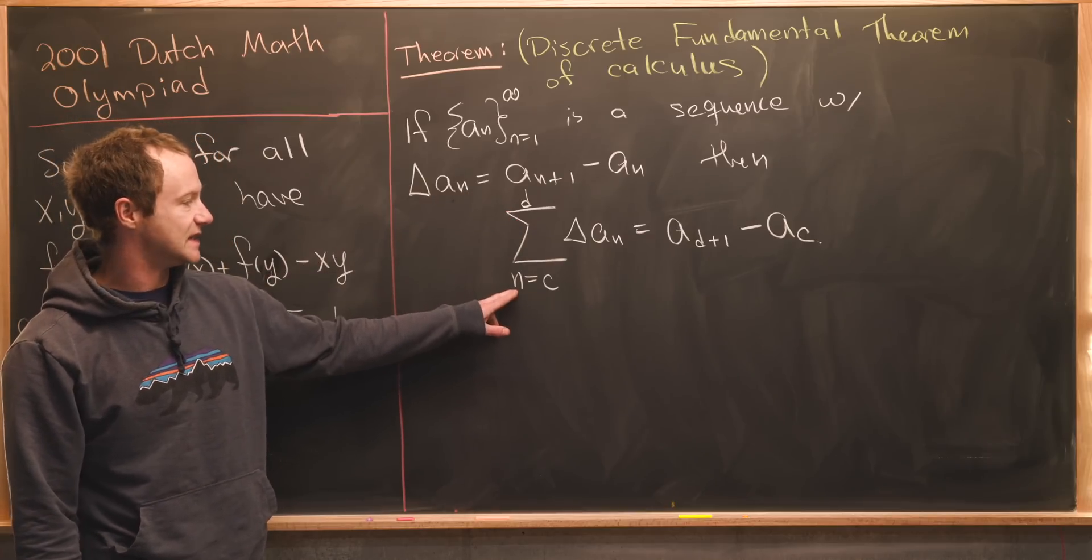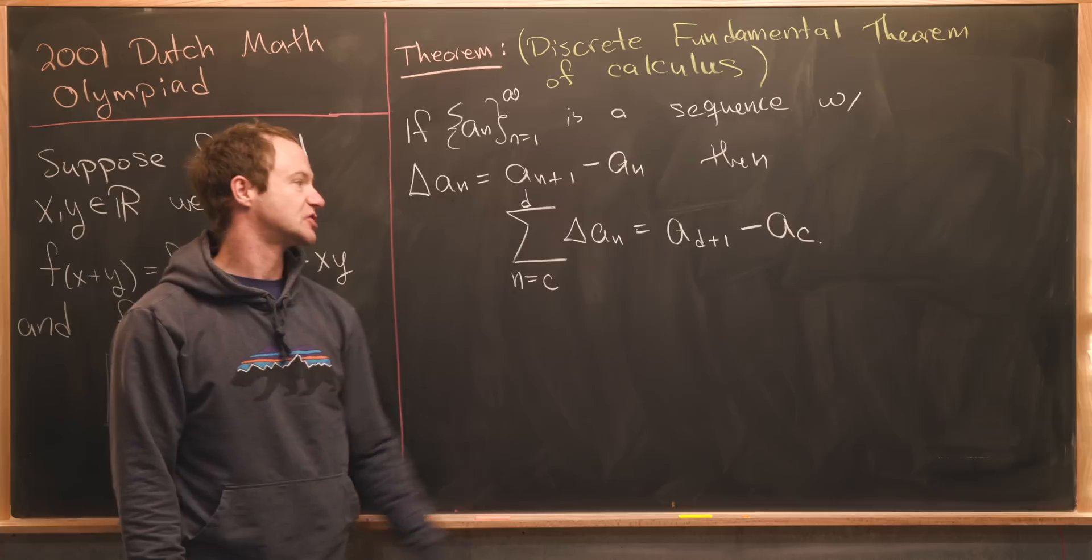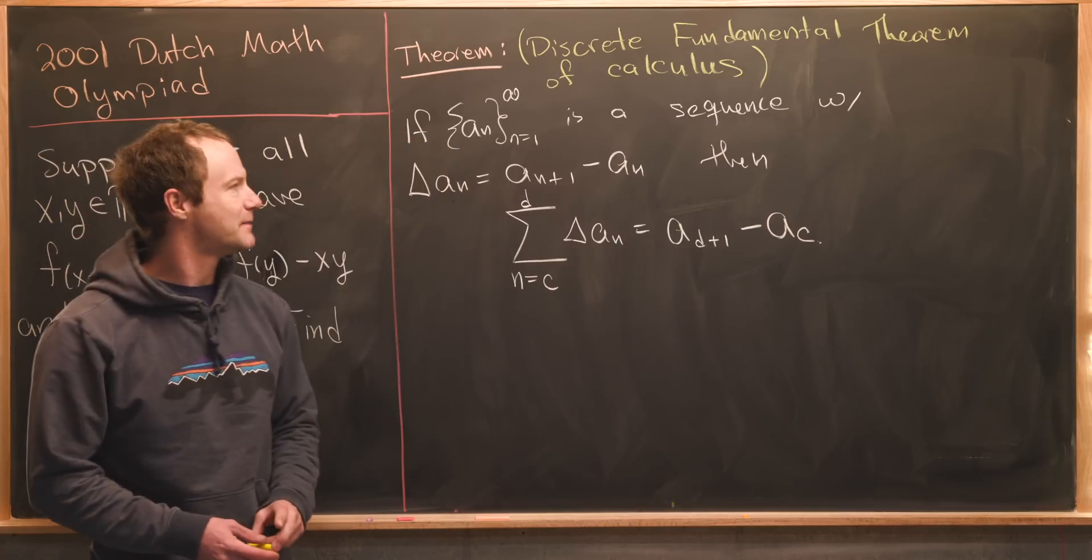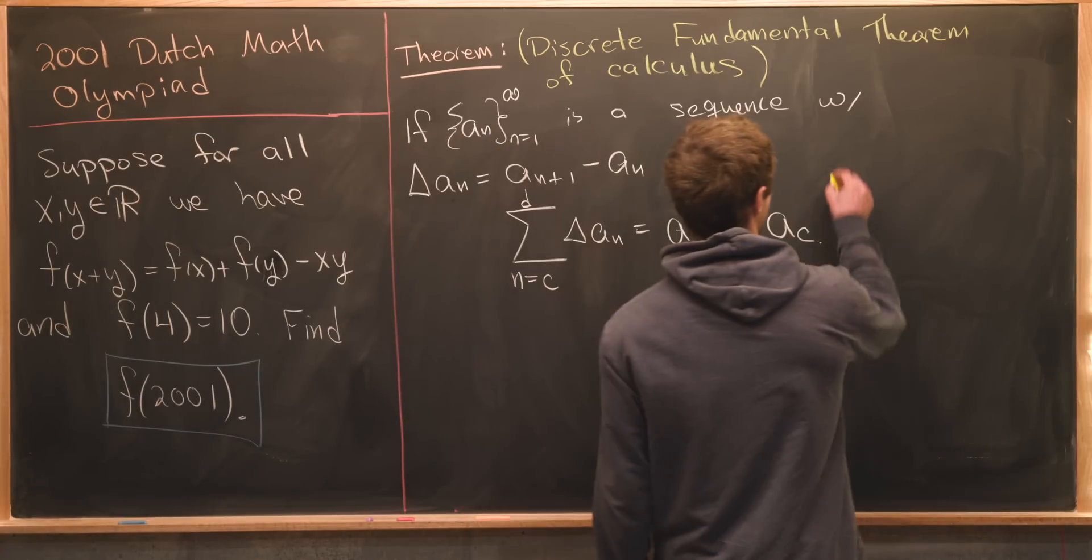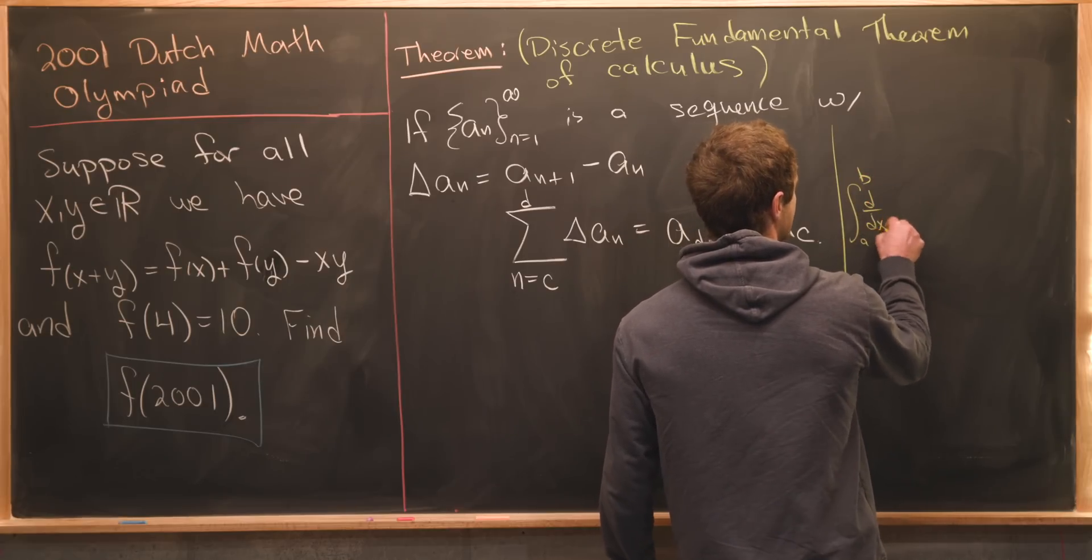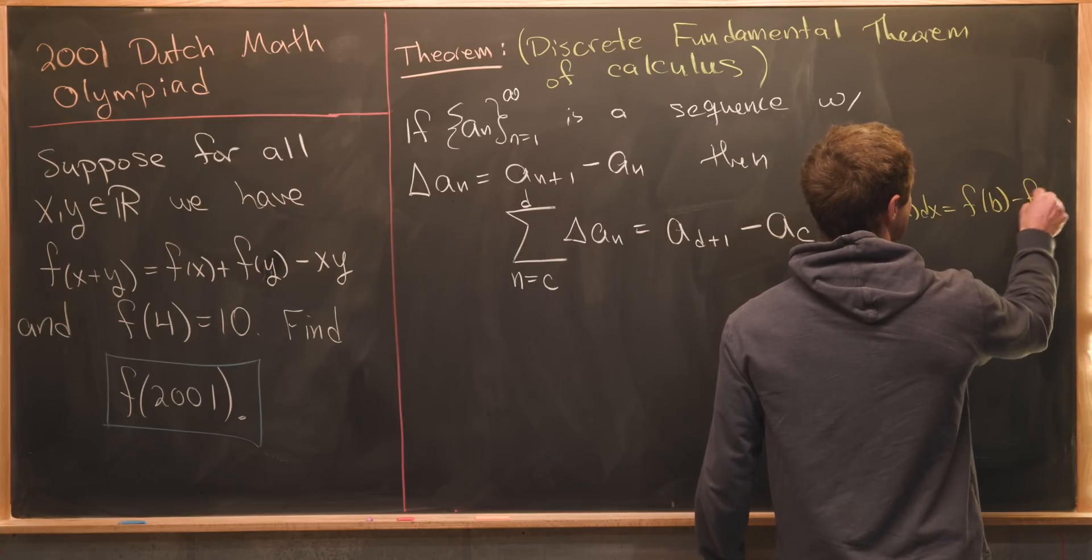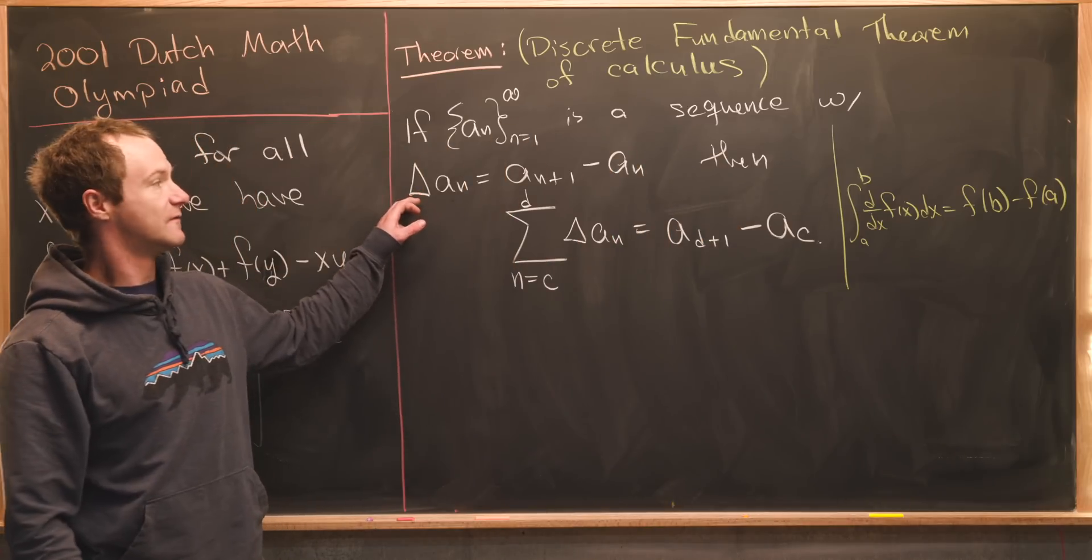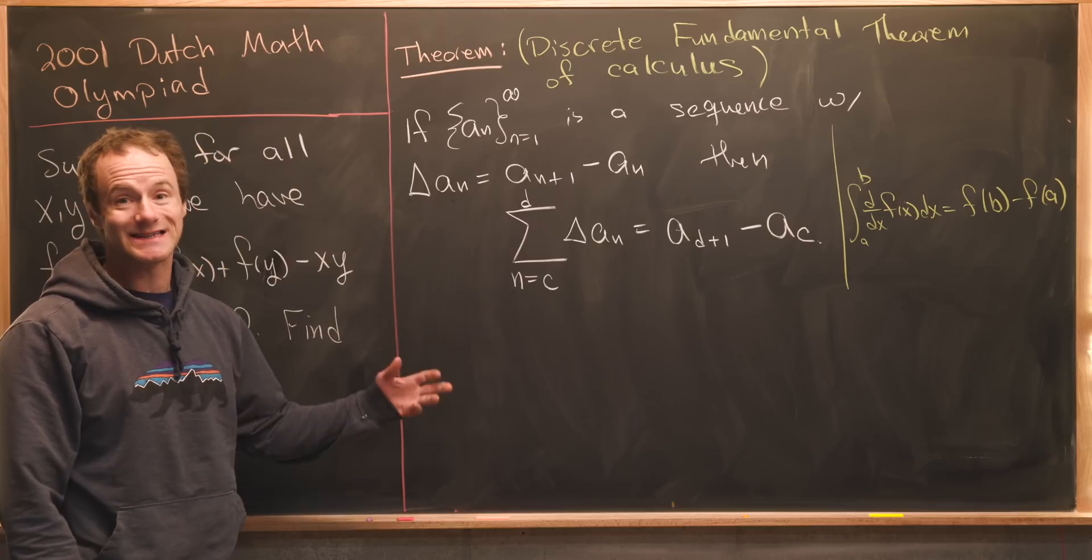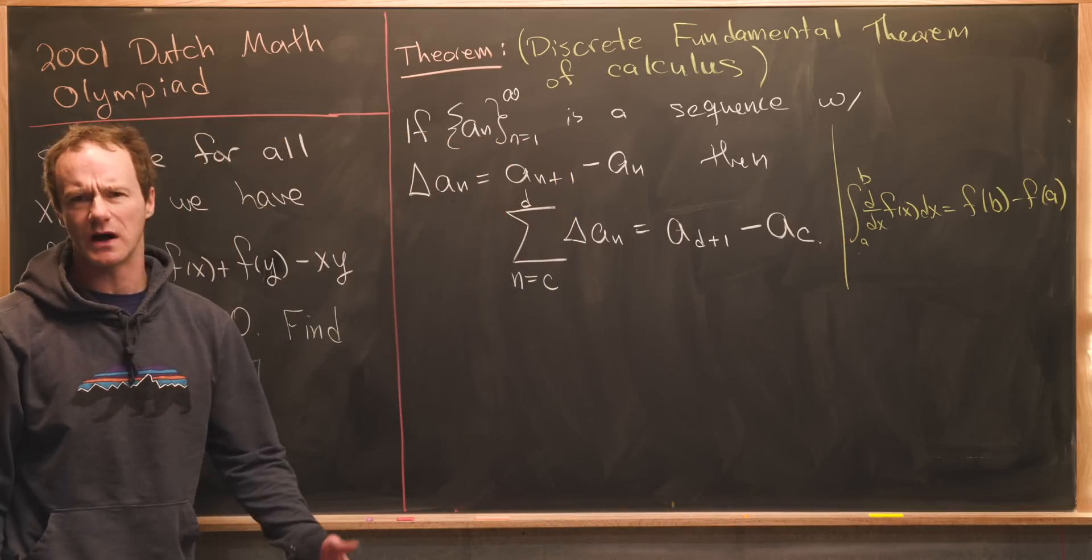Then the sum as n goes from c to d of delta a sub n is equal to a sub d plus one minus a sub c. I want to compare this to the normal fundamental theorem of calculus which says the integral from a to b of the derivative with respect to x of f of x dx is equal to f of b minus f of a. Here we're thinking about this forward difference operator as a discrete derivative and this sum as a discrete integral versus the continuous counterparts which are well known in calculus.